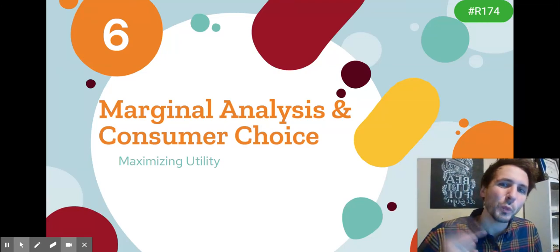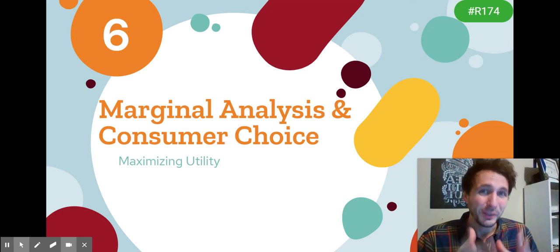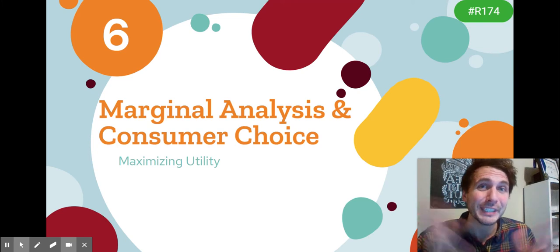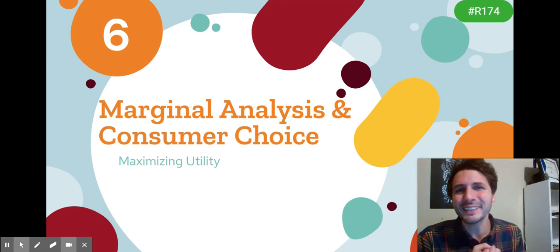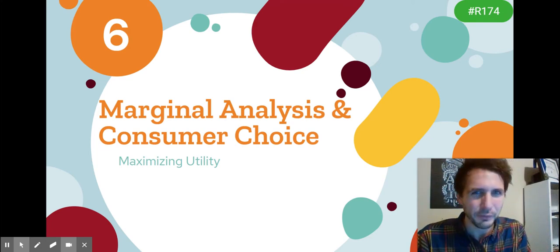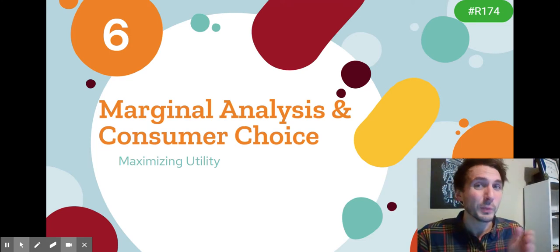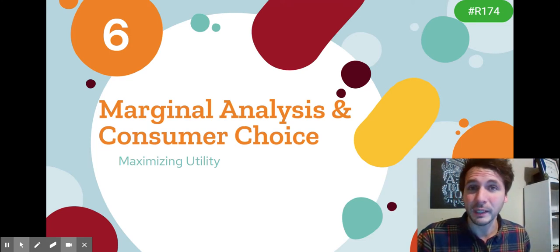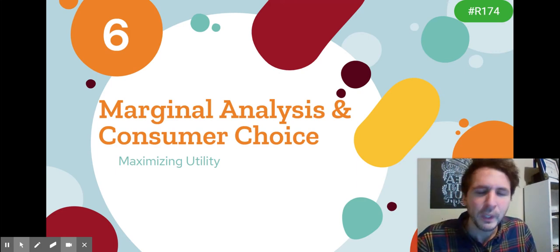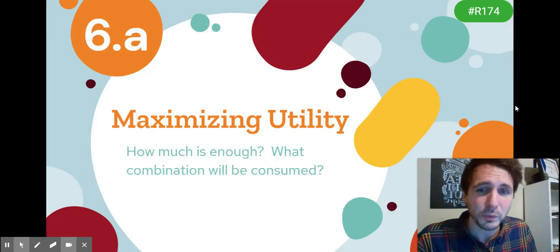Hi AP scholars, we are looking at concept 1.6 — the final concept of unit one. We made it already and it is only our second video. The topic is efficiency. In this concept, our first new concept in microeconomics, you start to see how micro is a little different from macro. There's a very specific set of procedures that if you follow, you will get the right answer every single time.